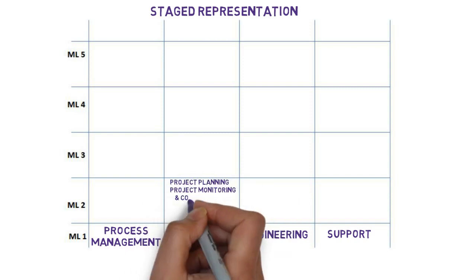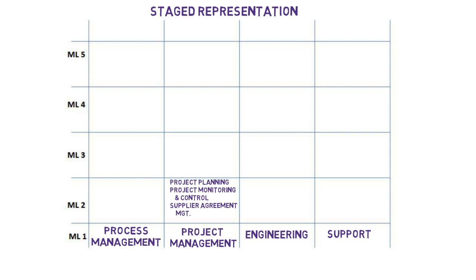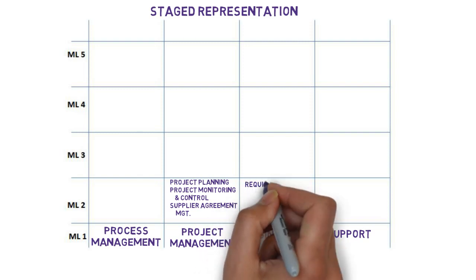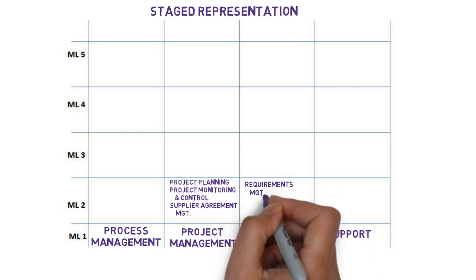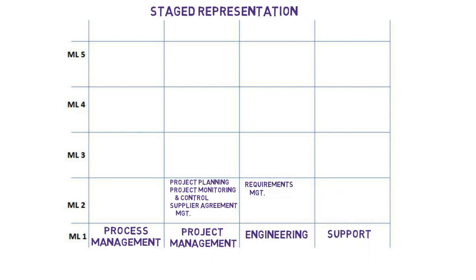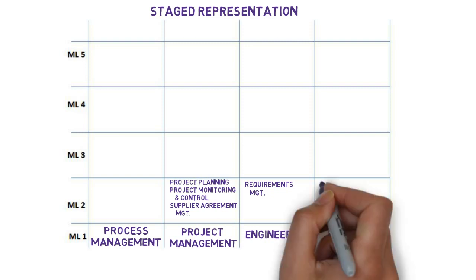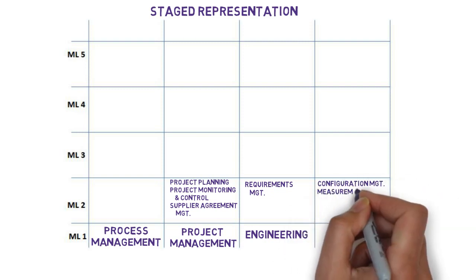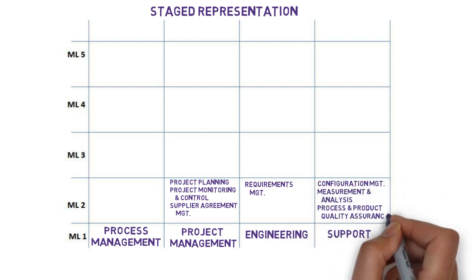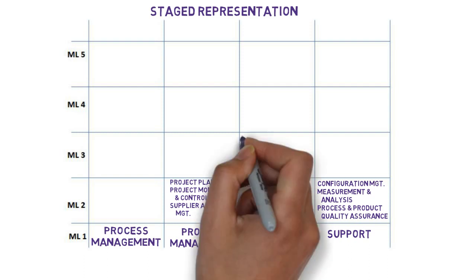Here are the process areas assigned to maturity level two. As a set, they represent getting control over a project and setting up a measurement focus for collecting historical data for improvement. The reality is that good engineering gets done in ad hoc organizations, but projects are not consistent or repeatable. So the first order of business is to bring some discipline to the project to support the engineering.